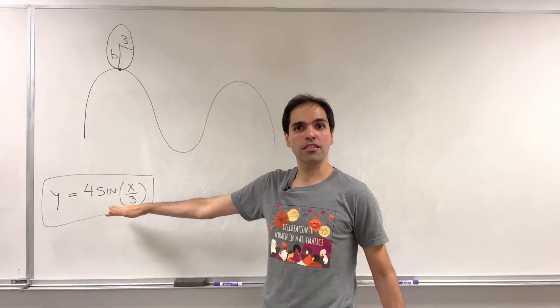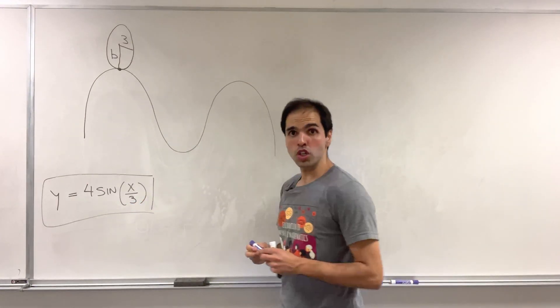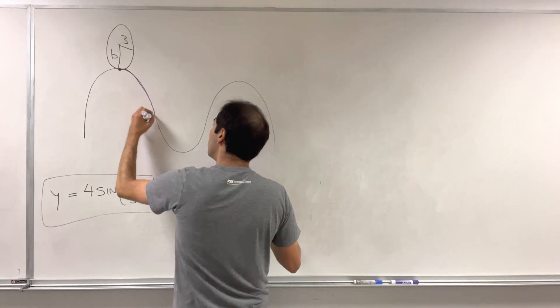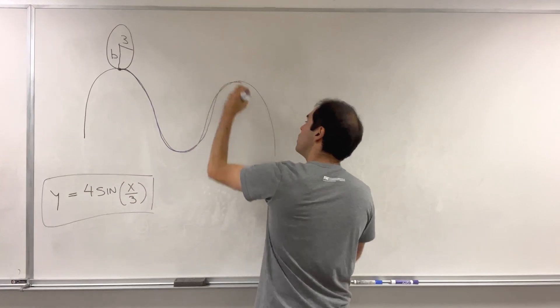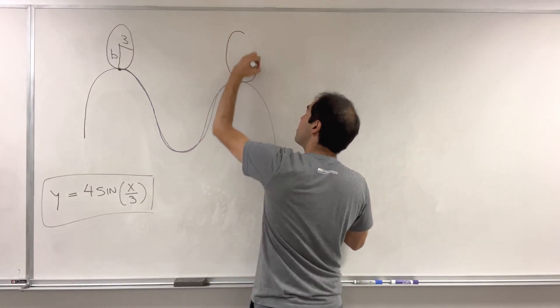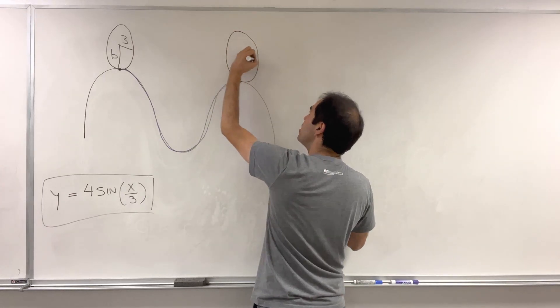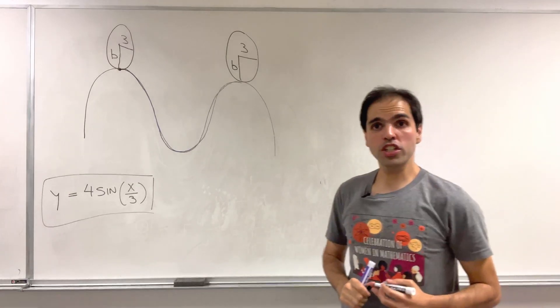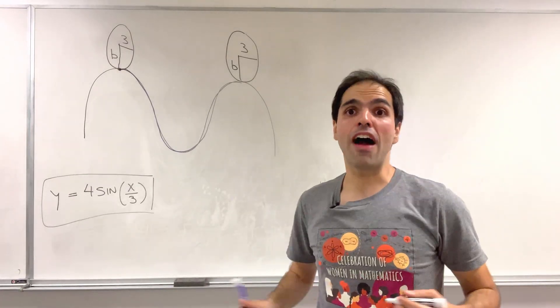4 sine of x over 3 in such a way that one revolution of the ellipse, so going from starting point to ending point, is the same thing as one period of the curve. And the question is what is the value of b?